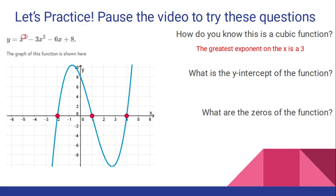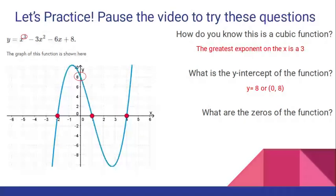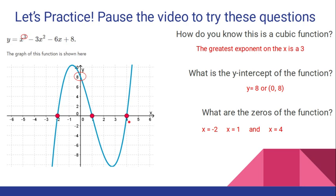Usually that term with the 3 is the first term if your polynomial is in standard form — remember, it's called the leading term. What is the y-intercept of the function? The graph crosses at (0, 8), so the y-intercept is at y equals 8. What are the zeros of the function? There are three zeros: they're at negative 2, at 1, and at 4. So we say x equals negative 2, x equals 1, and x equals 4. You could also write those in set notation with your braces.